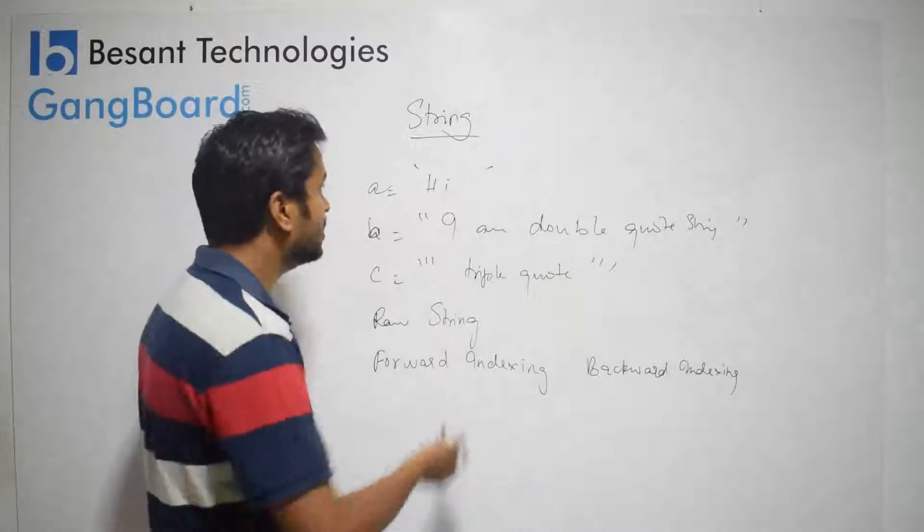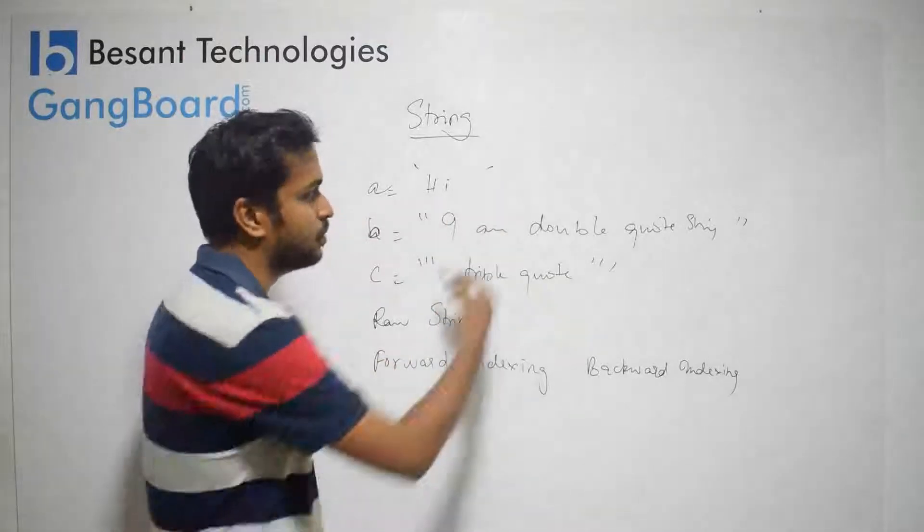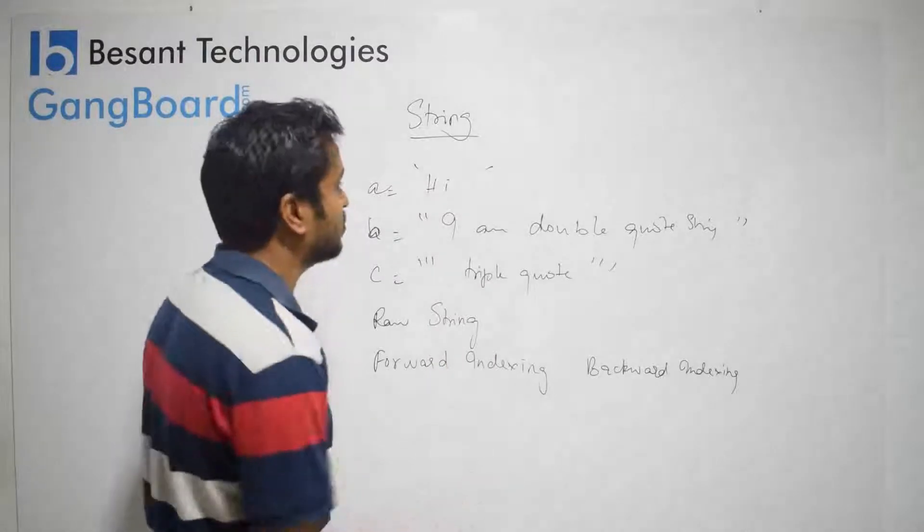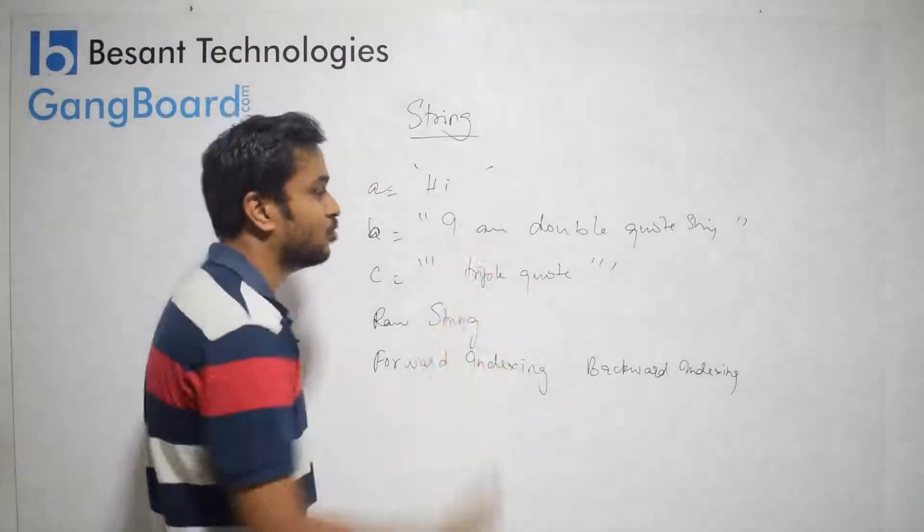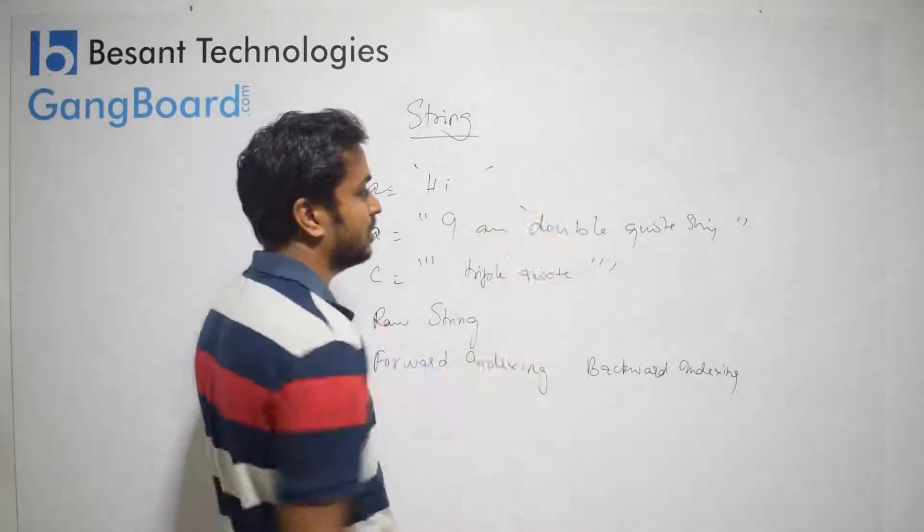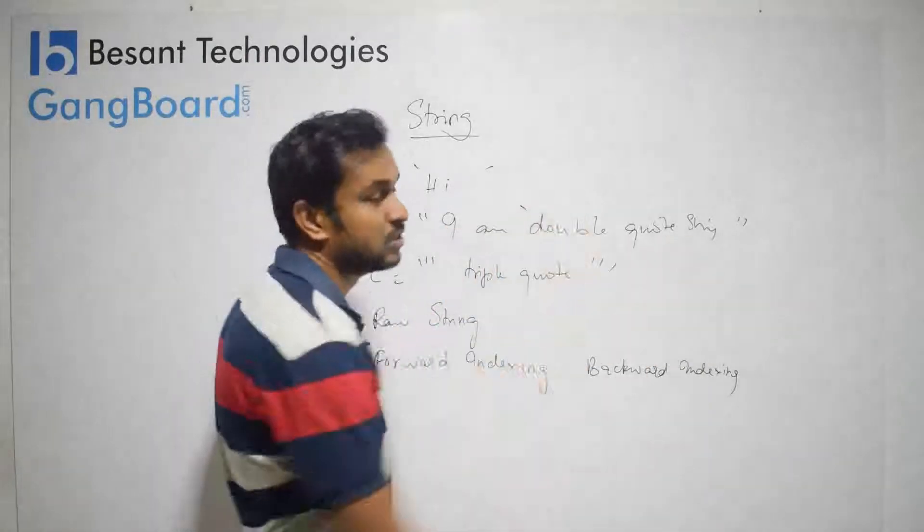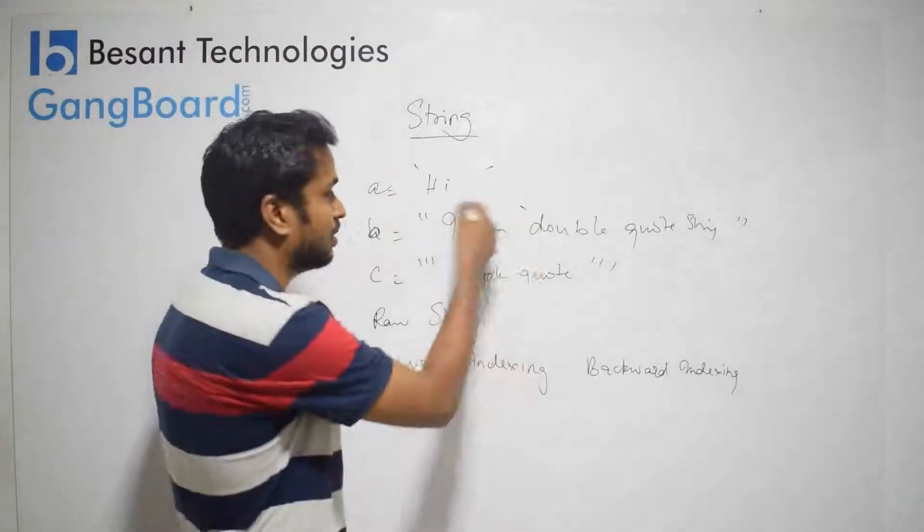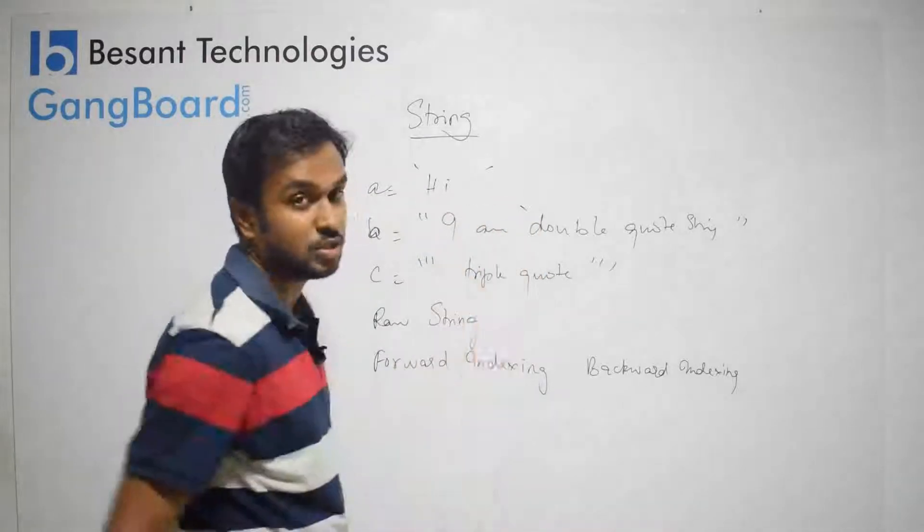Single-quote, double-quote, triple-quote - where do you use anything? But in case if you use single-quote, then it is preferred to use double-quote. Because if you use single-quote, then it might end. Python interpreter will start and end it.